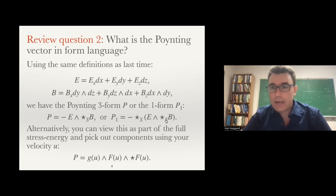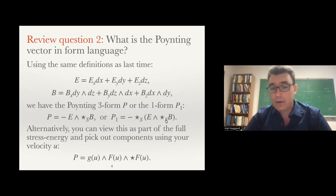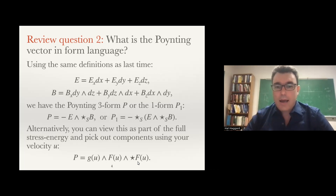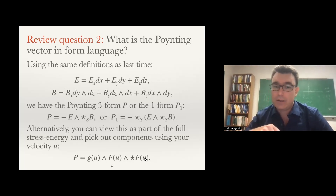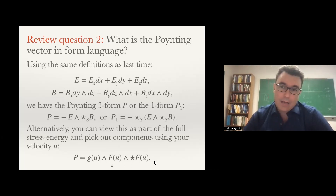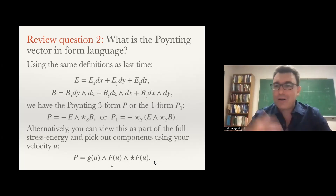Of course, you don't have to work with a three-form — you can dualize and work with a one-form. If you want to stay more covariant, you could use the field strength two-form F that we introduced last time. F had the electric components in the time part, and the dual of F had the magnetic components in the time part. If you contract those two forms with your four-velocity, you pick out those components and basically construct E cross B. I'm just showing you how to do all of these things in form language to give you more experience with it.